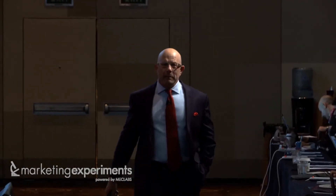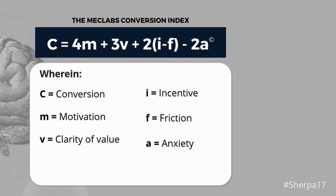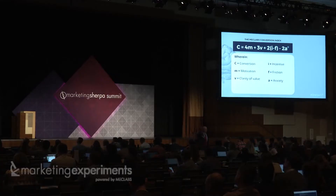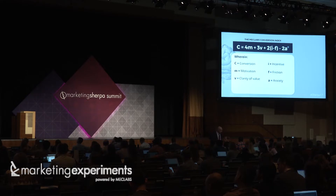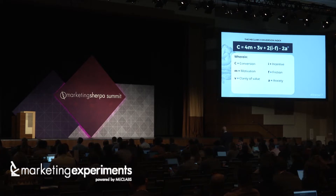So take a look at this. How many here are familiar with the conversion heuristic? There are resources everywhere at MarketingSherpa and MECLabs where you can read and understand this. This was a heuristic that was developed from patterning behavior across 20,000 plus path tests and experiments. With the patterning of behavior, we realize that the probability of conversion is equal to four —